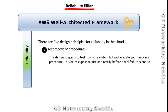Test recovery procedures suggests that we need to test how your system fails and validate your recovery procedures. This allows us to expose failures or shortcomings in the system or workload and rectify them before a real failure scenario occurs — meaning we act proactively.